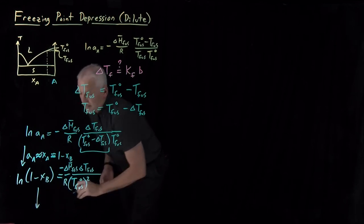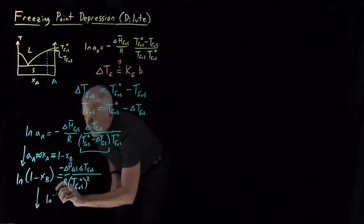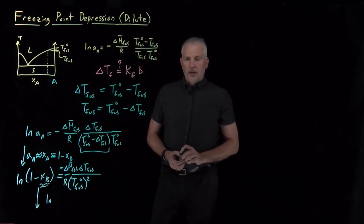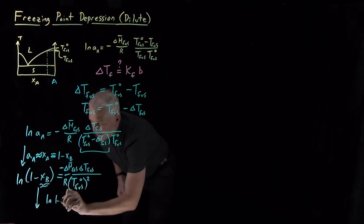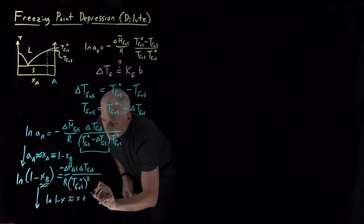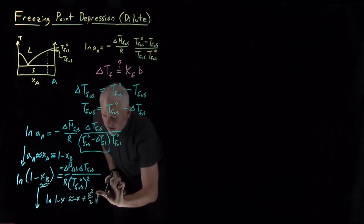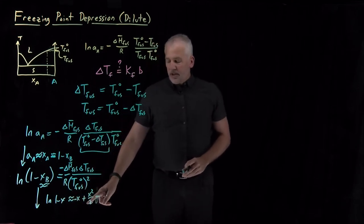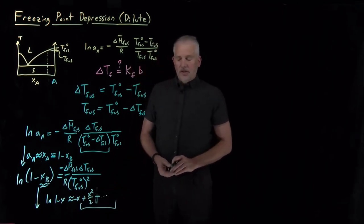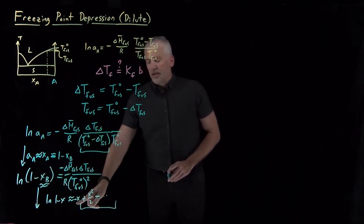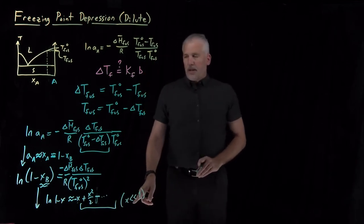As our next manipulation, now that I've got log of (1 minus x), we can use again the dilute solution approximation. In a dilute solution, x is going to be a small number — the mole fraction of the solute is small — so 1 minus x is a number fairly close to 1. I can use a Taylor series approximation: log of (1 minus x) equals minus x plus x-squared over 2 minus x-cubed, and so on. Since x is small, I don't care about the rest of these terms, and I'll replace log(1 minus x) with just minus x. That's valid when x is small compared to 1, which is the same as saying when I'm in dilute solution.